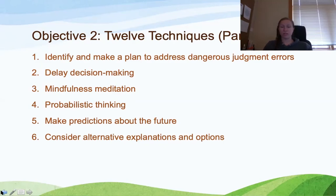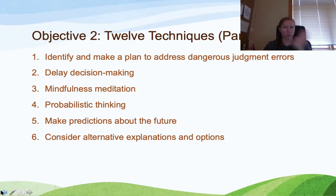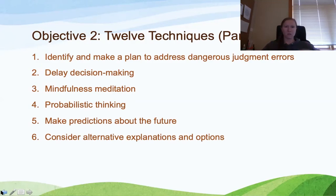Related to that is the strategy of making predictions about the future. If I do this, I predict that X, Y, or Z can happen. Taking time to step back and think through: what could happen? What is the worst-case scenario? What's the best-case scenario? What do I hope happens? What do I fear happens? Taking the time to do those mental exercises, write about them, and consider all angles can be very powerful. A lot of what these techniques are about is just slowing down your decision-making, making things more intentional, and considering all variables.